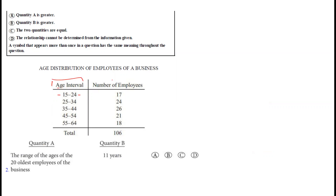For question two, we have age intervals from 15 to 24 and number of employees. Range equals maximum minus minimum. For the 20 oldest employees: 18 employees fall in the 55–64 age group, and we need two more, so we also include the 45–54 age group. These two ranges — 45 to 54 and 55 to 64 — are relevant.